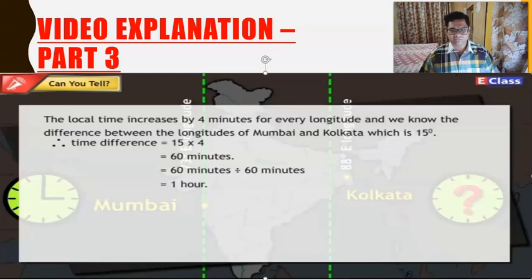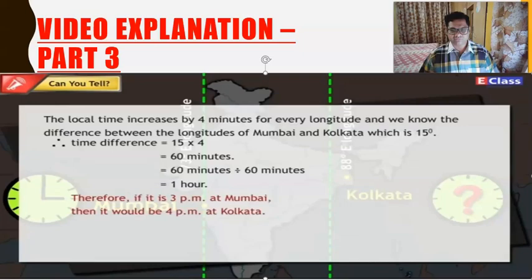Therefore, if it is 3 p.m. at Mumbai, then it would be 4 p.m. at Kolkata.